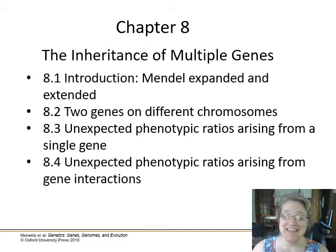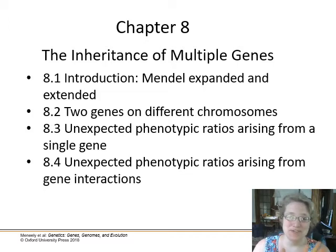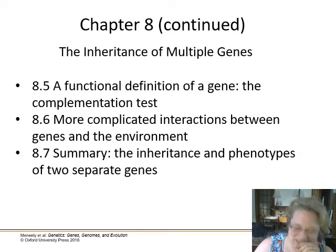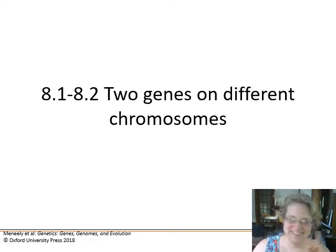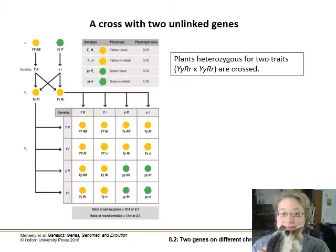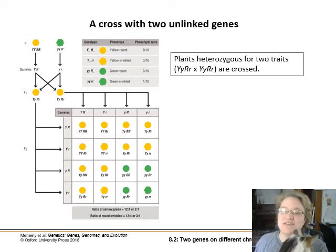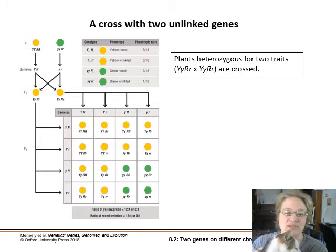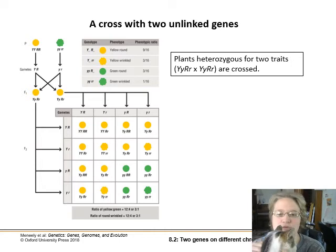We're going to talk about multiple genes on different chromosomes — two genes on different chromosomes. If you have genes that are on separate, completely independently assorting chromosomes and how they would segregate out if you're doing a cross and looking at two traits, there is an equal probability of winding up with any of the trait combinations.